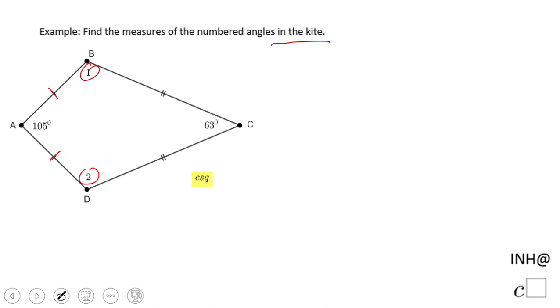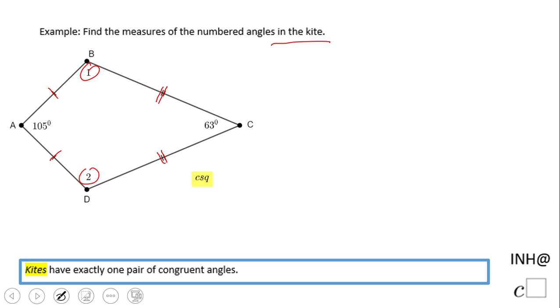So in this case, AD and AB are congruent, BC and DC are also congruent, but the opposite sides are not congruent. That is the definition of a kite. And we have some new properties for kites.